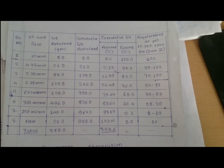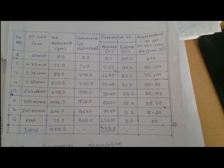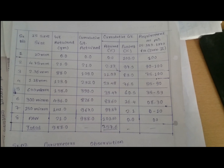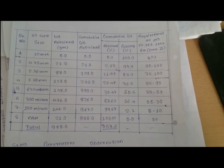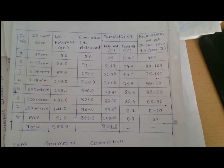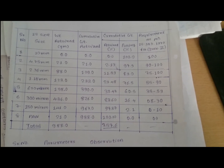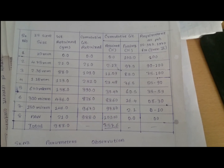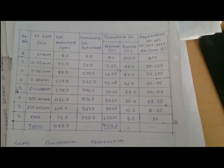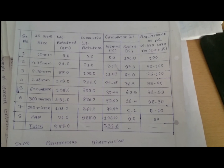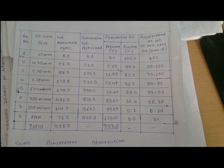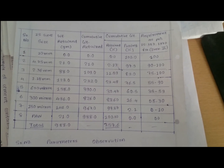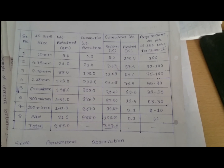Compare this passing percentage with IS 383:1970 code for various zones 1, 2, 3, and 4. Our result is matching with Zone 2, as you can see in the video: 100%, 100%, 97.9% is between 90 and 100, 89% is between 75 and 100, 76% is between 55 and 90, 16.4% is between 8 and 30, 2.1% is between 0 and 10.